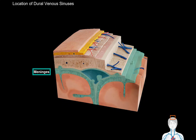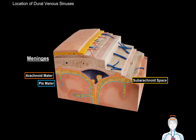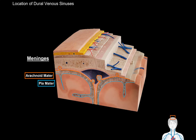The meninges are what we're essentially going to focus on. The meninges consist of three layers. You have the pia mater, which is the thinnest and most delicate layer lying just on top of the surface of the brain tissue. Superficial to that is the arachnoid mater, which is slightly thicker. Underneath the arachnoid mater is the subarachnoid space, which contains cerebrospinal fluid. You'll notice arachnoid granulations that take the cerebrospinal fluid and pump it into the venous sinuses to complete its circulation.